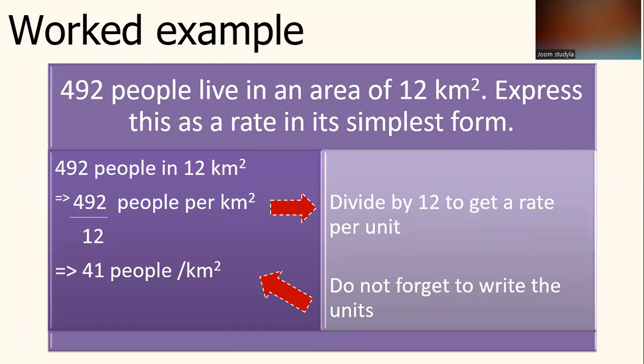Let's look at one of the worked examples. Given the question is, 492 people live in an area of 12 km squared. Express this as a rate in its simplest form. We know that 492 people in 12 km squared. You have to divide by 12 to get a rate per unit. So 492 people divided by 12 per km squared. As a result, you get the answer is 41 people per km squared. Do not forget to write the units. In this case, km squared.